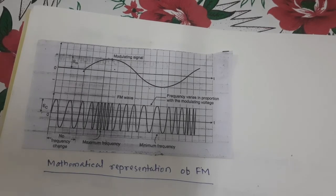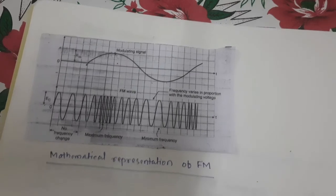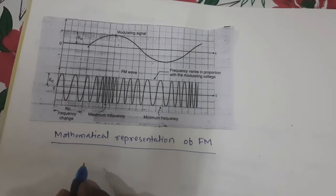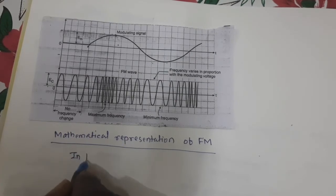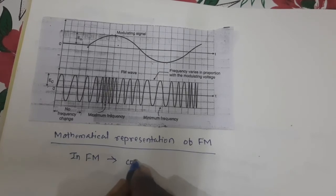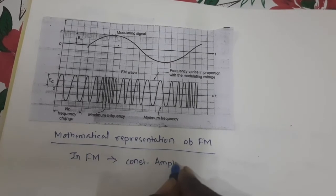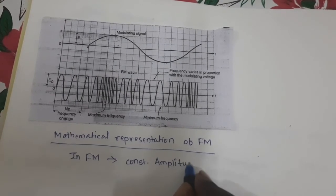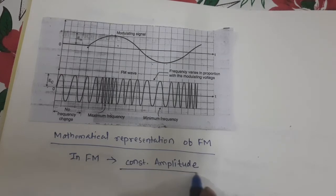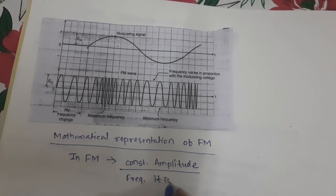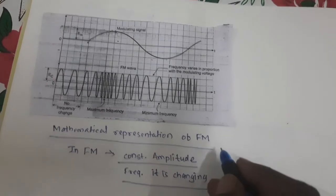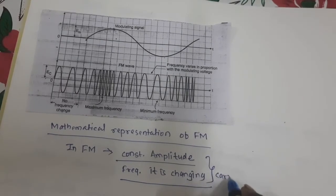Our basic aim of today's lecture is to derive the mathematical representation of FM — how this FM wave can be mathematically represented. We know that in FM there is constant amplitude. Whatever the amplitude of the carrier, it is constant. In FM, amplitude is constant but frequency is changing — there is always a change in the frequency of the carrier.